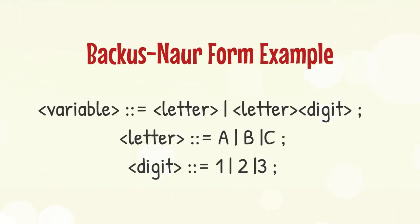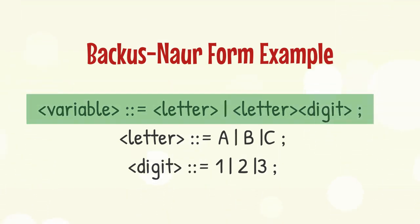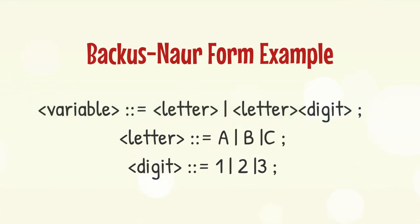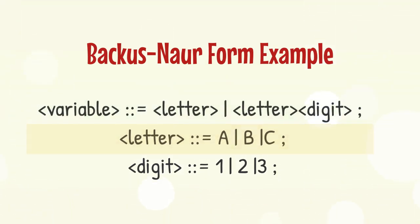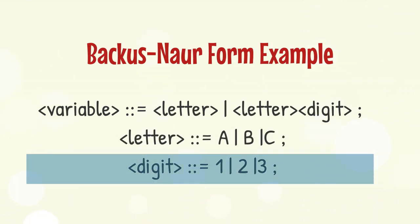Let's see a simple BNF example. This example shows that a variable could be a single letter, or a letter followed by a single digit. According to the definition of letter, it could be either A, B, or C, and a digit could be either 1, 2, or 3.